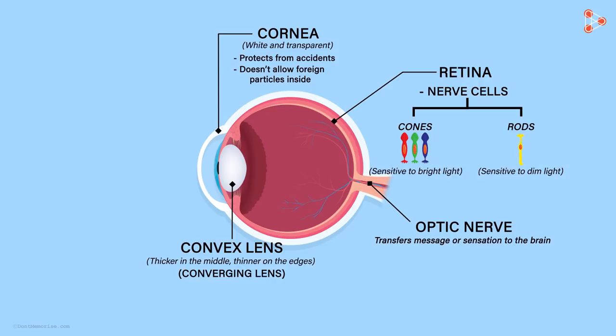Behind the cornea, the colorful part of the eye called the iris is present. It has a small opening at the center called pupil. Iris controls the light entering through the pupil by contracting and expanding.